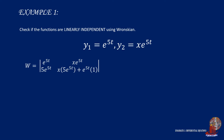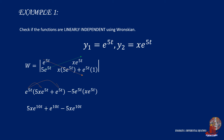Now that we have all elements of the matrix, we work with the determinant by multiplying the diagonals and subtracting them. We have e raised to 5t times the quantity of 5x times e raised to 5t plus e raised to 5t, then subtract 5 times e raised to 5t times x times e raised to 5t. Distributing and collecting similar terms gives 5x times e raised to 10t plus e raised to 10t minus 5x times e raised to 10t. The 5x times e raised to 10t terms cancel, leaving e raised to 10t, which is not equal to 0. So the functions are linearly independent.